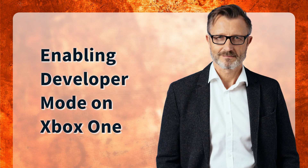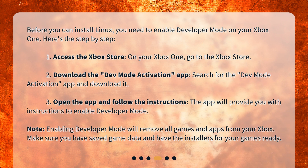Enabling Developer Mode on Xbox One. Before you can install Linux, you need to enable Developer Mode on your Xbox One. Here's the step-by-step. 1. Access the Xbox Store on your Xbox One. 2. Download the Dev Mode Activation app — search for it and download it. 3. Open the app and follow the instructions — the app will guide you to enable Developer Mode. Note: enabling Developer Mode will remove all games and apps from your Xbox, so make sure you have saved your game data and have the installers ready.